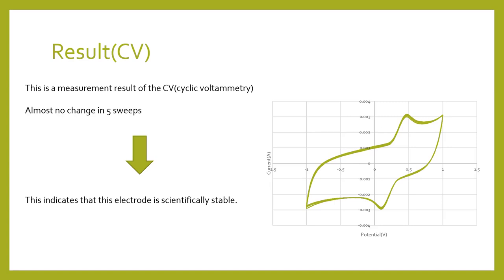This is a measurement result of the CV, cyclic voltammetry. Almost no change in five sweeps. It can be seen that the power generation characteristics do not change depending on the number of times the current is applied. This indicates that this electrode is scientifically stable.